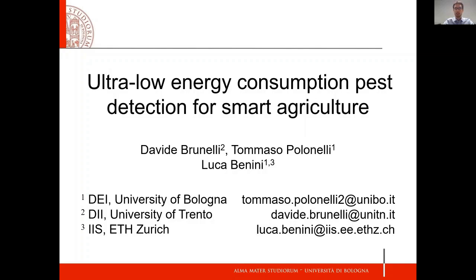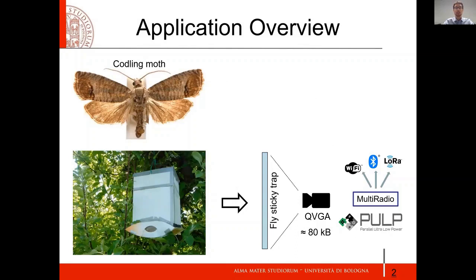It is an IoT-based application scenario in which we exploit the paradigm of edge computing. The application is specifically designed to run in a smart agriculture system. Basically, the structure of the sensor is based on a flystick trap, which is useful to trap dangerous insects — in this case, the Codling Moth, which is specifically dangerous for apples.